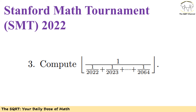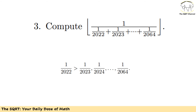Now let's focus on problem number 3. We want to compute the floor of a certain fraction — that is, find the integer part of the expression. Remember, there is no calculator allowed. I'll look for a simplification. The expression involves 1/2022 + 1/2023 + ... and I need to bound it carefully.